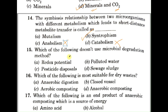Question number fifteen: which of the following does not use microbial degradation methods? A: redox potential, B: polluted water, C: pesticide disposal, D: sewage sludge. Polluted water, pesticide disposal, and sewage sludge all use microbial degradation. However, redox potential is not a method that uses microbial degradation. The correct answer is A, redox potential.